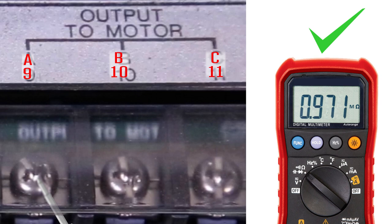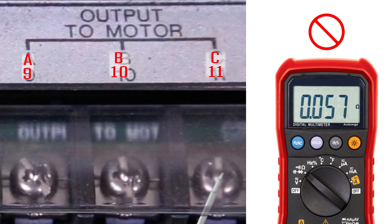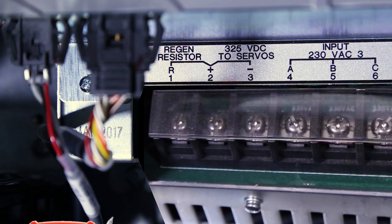The meter should show high resistance readings, typically in the range of kilo or mega ohms. If your meter reads very low resistance, the vector drive is damaged.